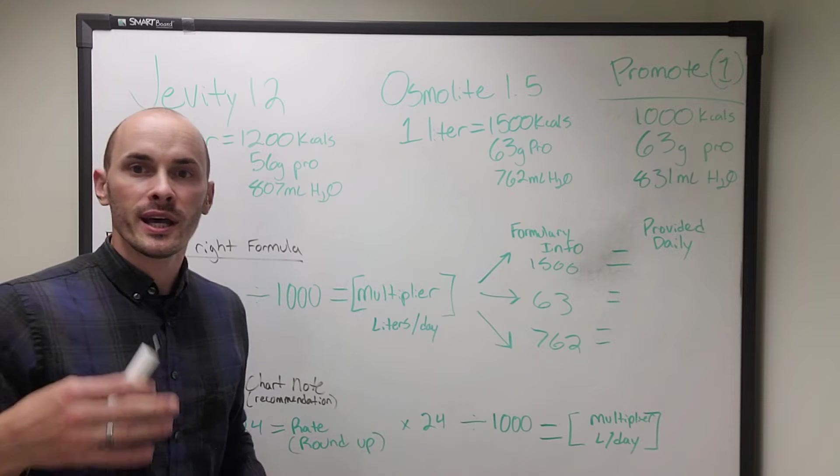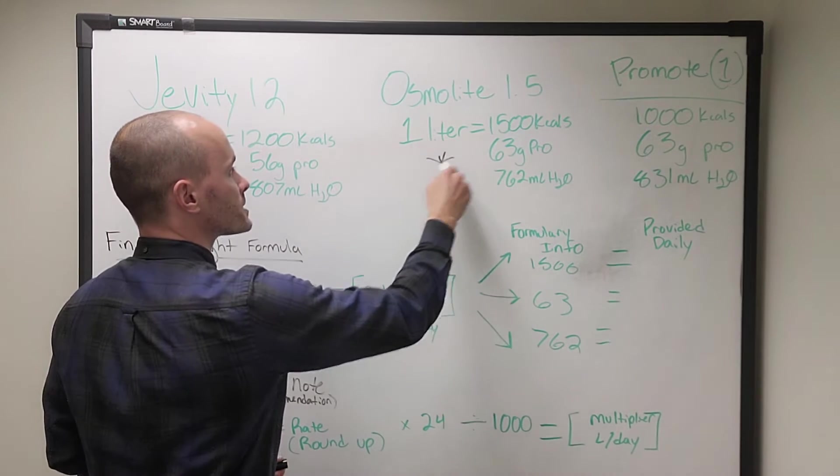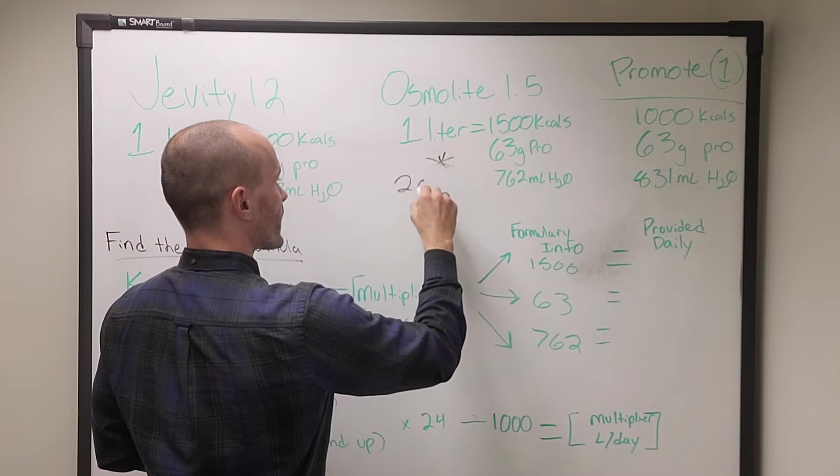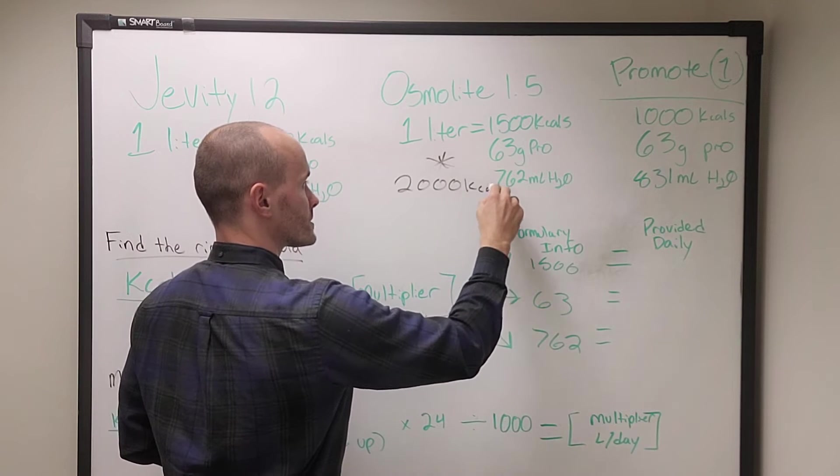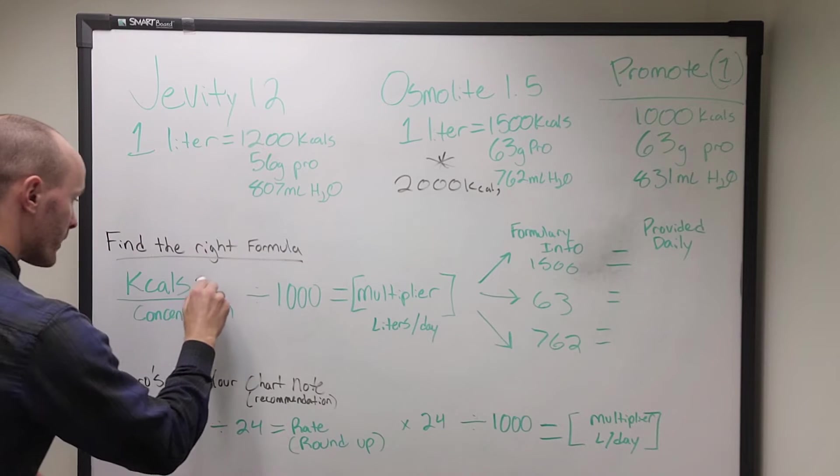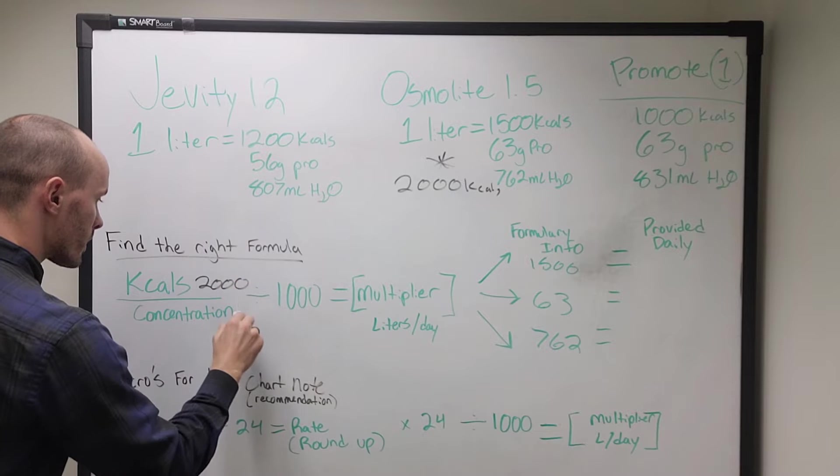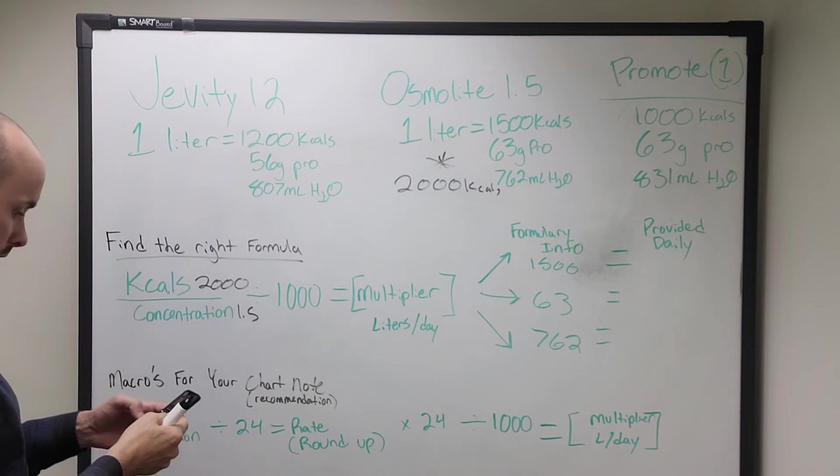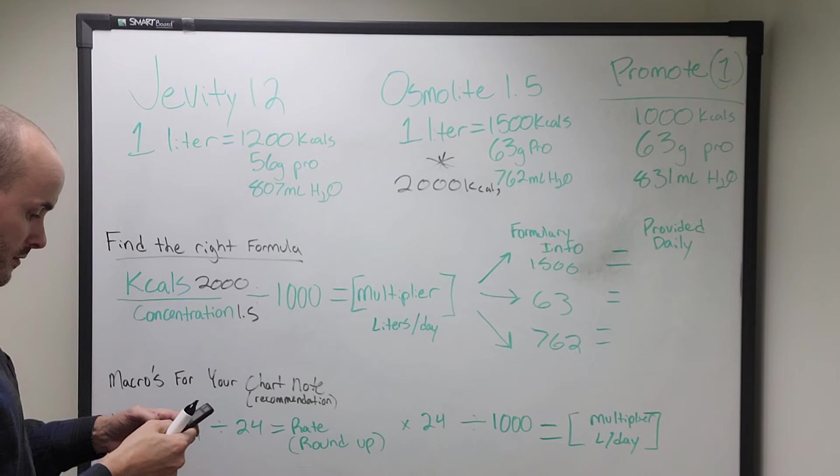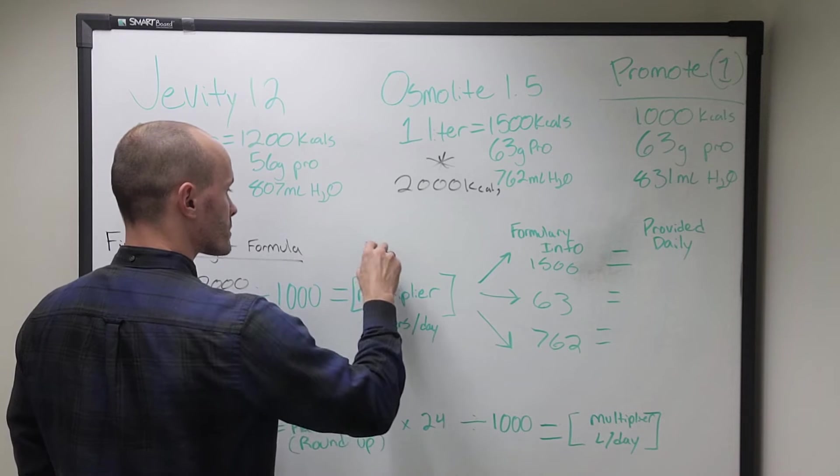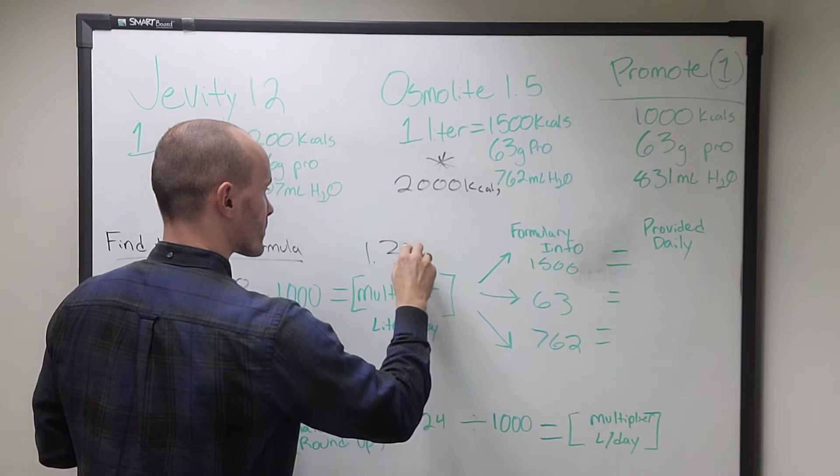So let's use an experimental number here. I'm going to change colors. Let's say our patient is going to be on osmolite 1.5 and they need 2,000 calories per day, kcals. So here we're going to put 2,000. We're going to divide by 1.5. So let's get out our calculator. 2,000 divided by 1.5 gives us 1333, divided by 1,000 gives us our multiplier, 1.33.